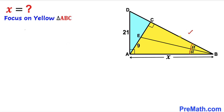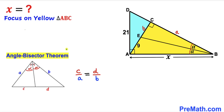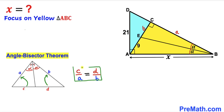Let's label side length BC as lowercase a and side length EC as lowercase b. Now let's recall the angle bisector theorem: if the angles are alpha and alpha, then we have the proportion c divided by a equals d divided by b.